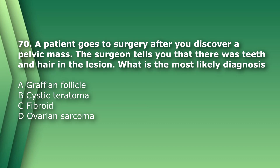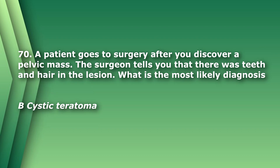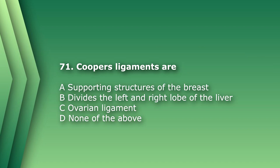Question 70: A patient goes to surgery after you discover a pelvic mass — the surgeon tells you there were teeth and hair in the lesion. What is the most likely diagnosis? A) Graafian follicle, B) cystic teratoma, C) fibroid, D) ovarian sarcoma. The answer is B, cystic teratoma, also known as a dermoid cyst. Teratomas are germ cell tumors that contain fat, hair, and teeth among other tissues — the word 'teratoma' means monster.